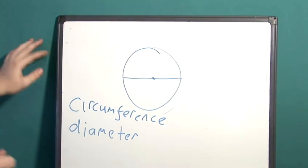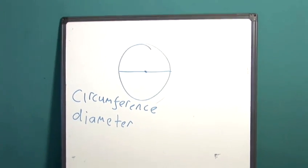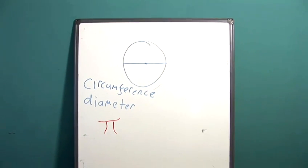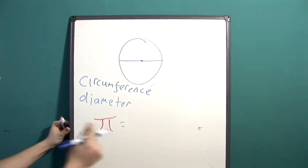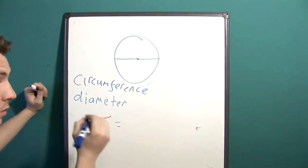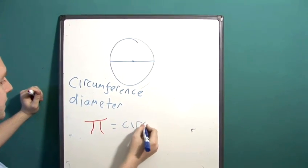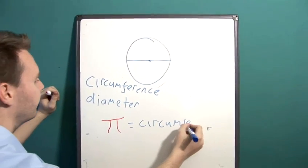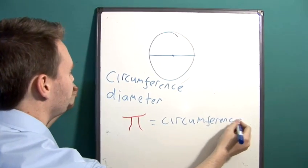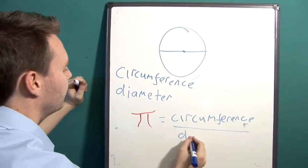All you need to do to find out pi is to do the following. Pi is equal to, with any circle—and that's the remarkable thing—circumference divided by diameter.